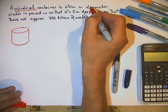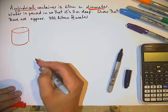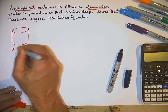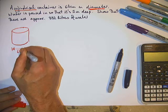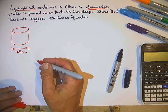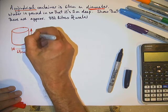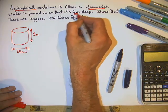It's 65 centimetres in diameter. So that measurement is 65 centimetres. Water is poured in so that it's one metre deep. So we've got one metre of water.